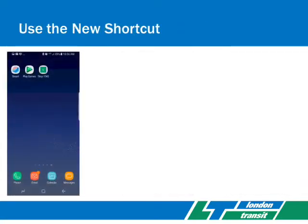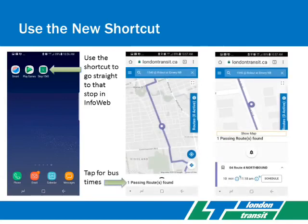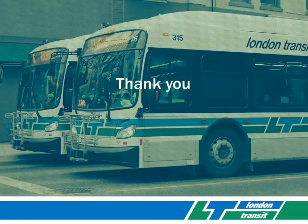Your phone will now have a shortcut that goes straight to the stop in InfoWeb. As before, you will still need to tap the box at the bottom, and if there's more than one route displayed, the route you want to see. Thank you for watching.